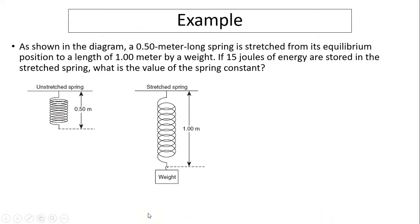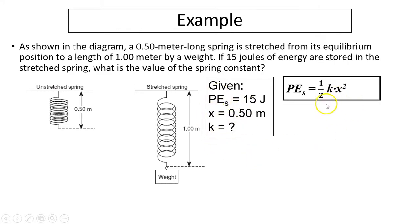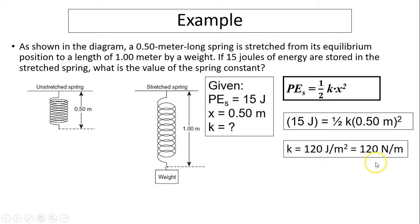Example: As shown in the diagram, a 0.5-meter-long spring is stretched from its equilibrium position to a length of 1 meter by a weight. If 15 joules of energy are stored in the stretched spring, what is the spring constant? We know PEs equals 15 joules and x equals 0.5 meters (1 minus 0.5). Using PEs equals one half k x squared, solving for k gives 120 newtons per meter. The unit for k can also be derived as joules divided by meters squared.